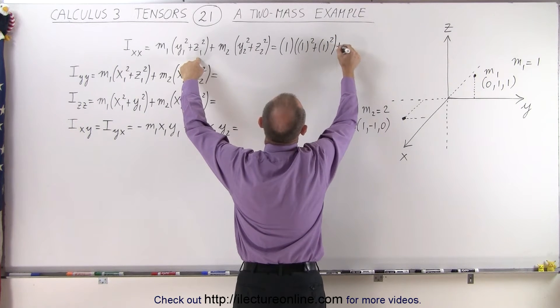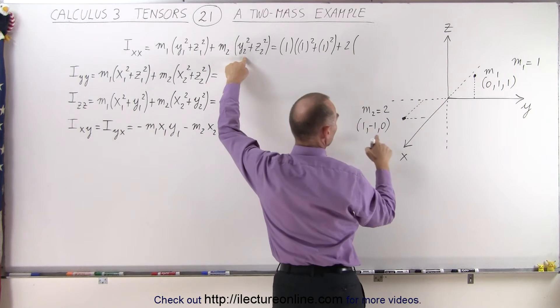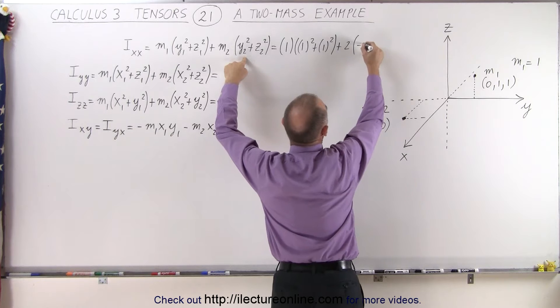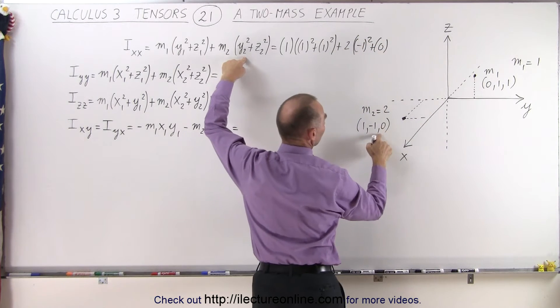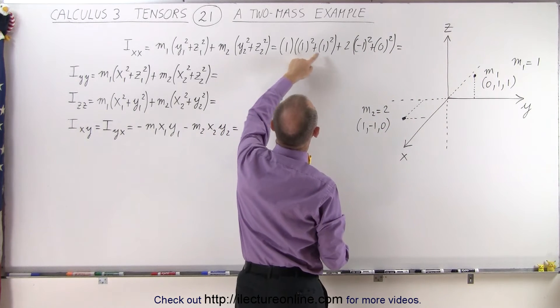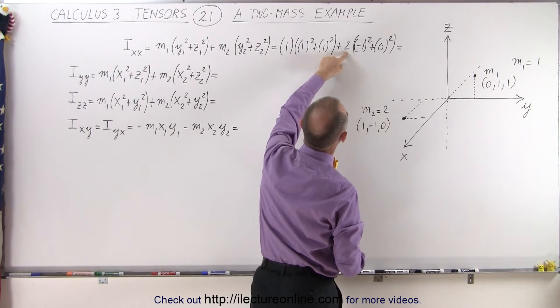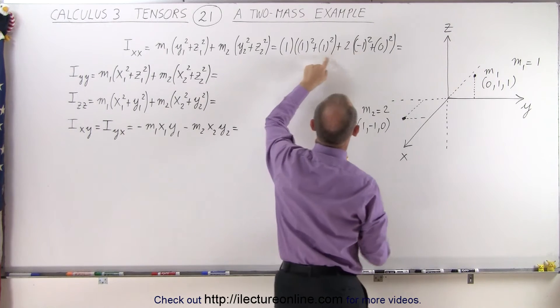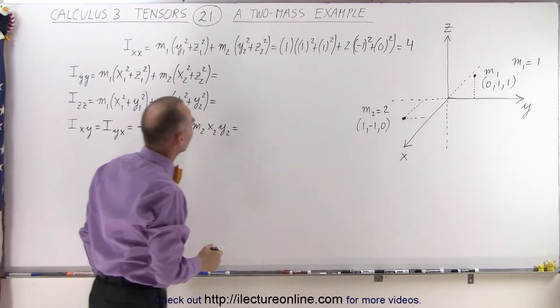And to that we add m2, which is 2, times y squared. So y squared would be minus 1 squared, and z in this case is equal to 0. And so that is equal to 1 plus 1 is 2 times 1, that's 2. And then here we have 2 times 1, which is 2 again. 2 plus 2 is equal to 4. So that element is equal to 4, and that's the moment of inertia relative to any rotations or accelerations around the x-axis.